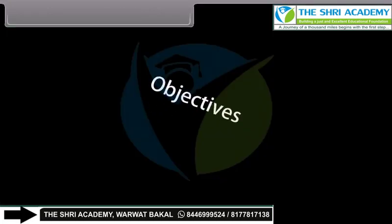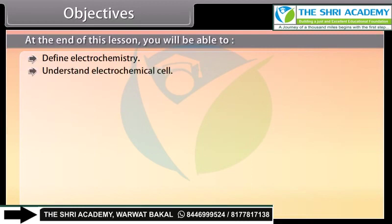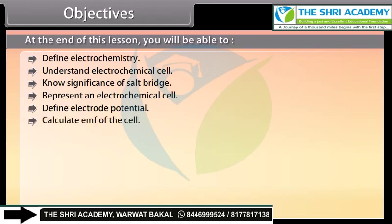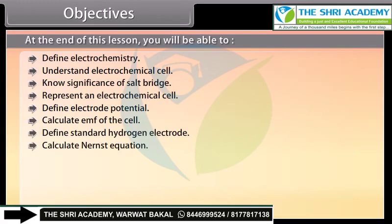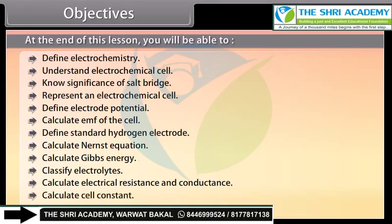Objectives: At the end of this lesson, you will be able to define electrochemistry, understand electrochemical cell, know the significance of salt bridge, represent an electrochemical cell, define electrode potential, calculate EMF of the cell, define standard hydrogen electrode, calculate Nernst equation, calculate Gibbs energy, classify electrolytes, calculate electrical resistance and conductance, calculate cell constant, and explain Kohlrausch's law.